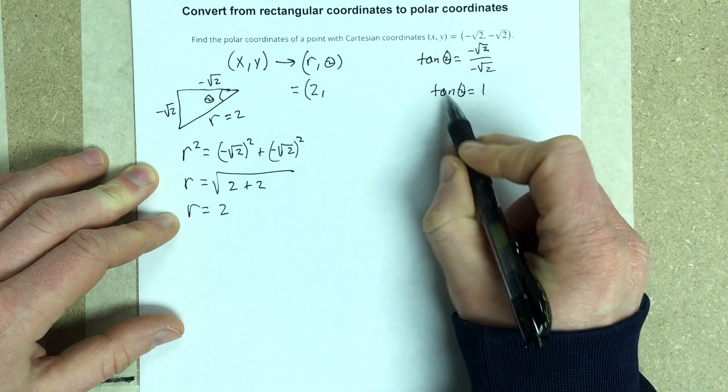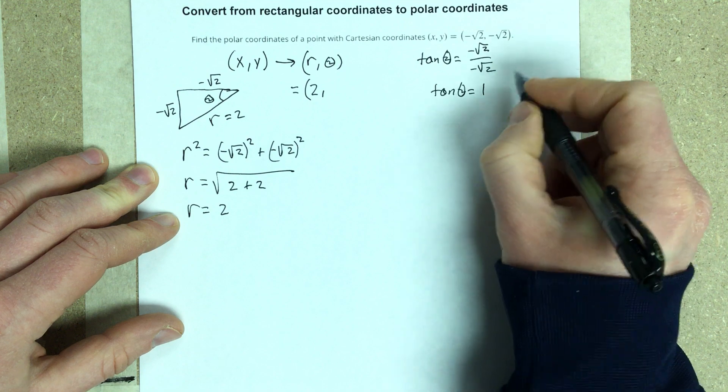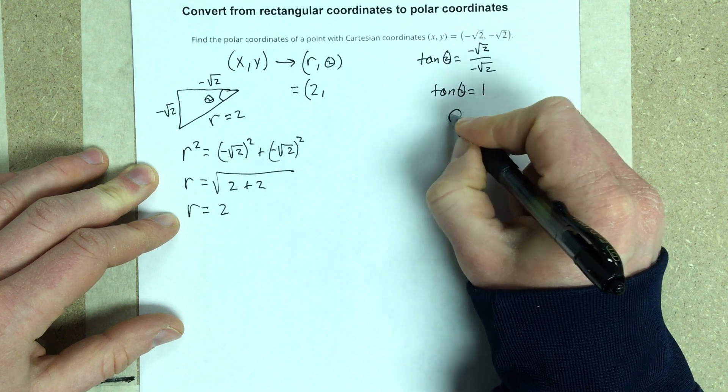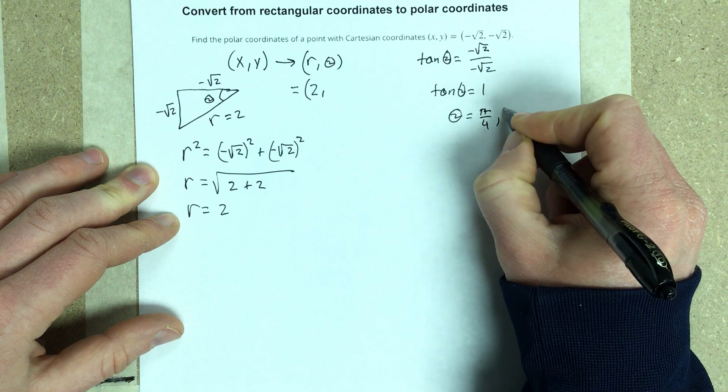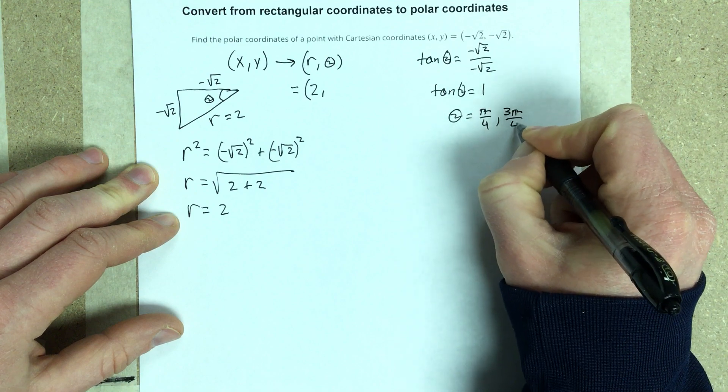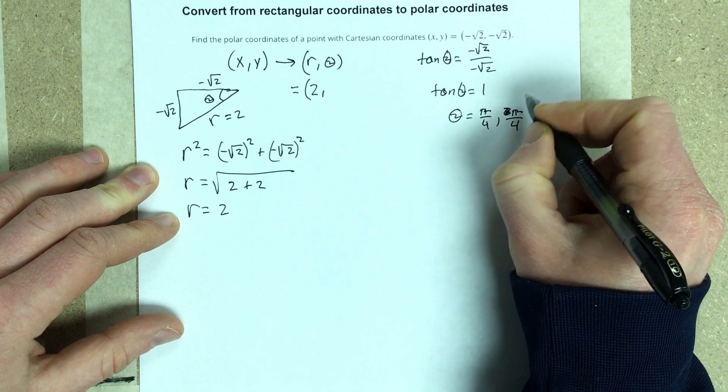And I know this occurs at 2 different spots. It occurs at pi over 4, so theta at pi over 4, and at 3 pi over 4. Oh, not 3 pi over 4, 5 pi over 4.